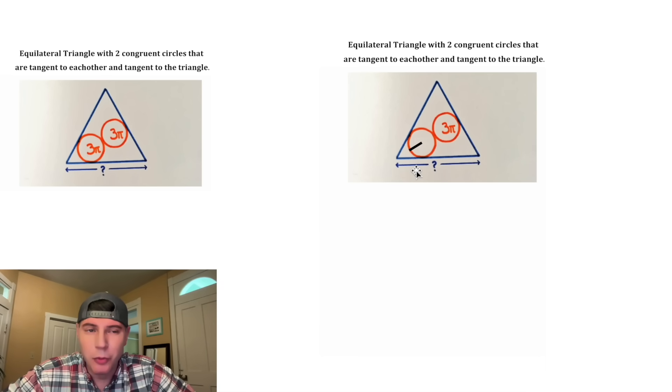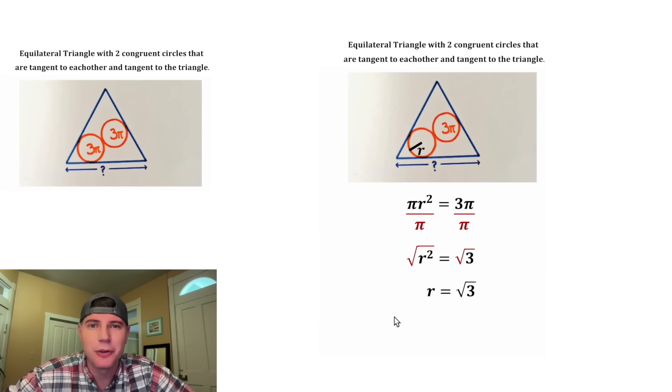First, let's draw the radius of one of the circles and let's label it r. The area of a circle is equal to pi r squared, so we can say pi r squared is equal to the area of 3 pi. First, let's divide both sides by pi and we have r squared is equal to 3. And then after we square root both sides, we have r is equal to the square root of 3. And we can change that up here.